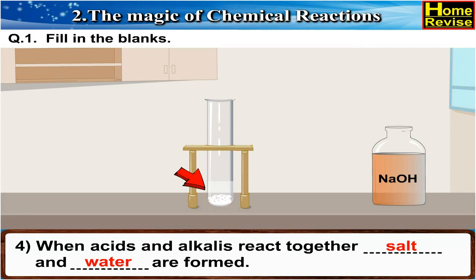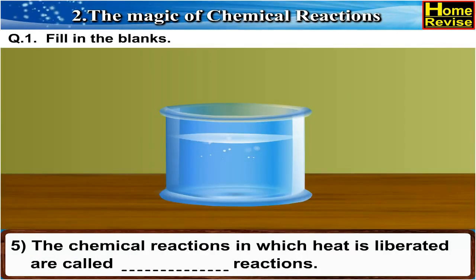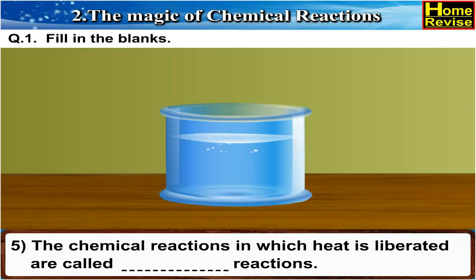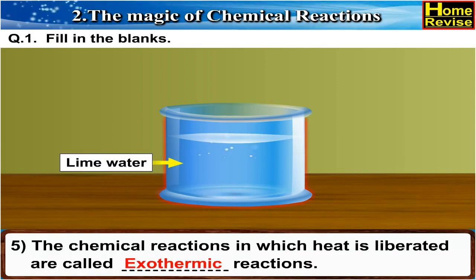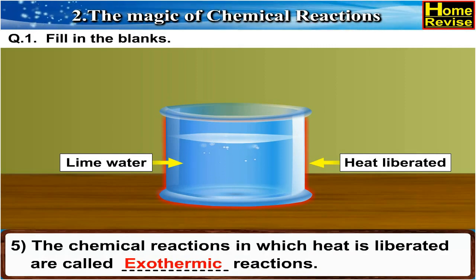5. The chemical reactions in which heat is liberated are called blank reactions. The answer is: the chemical reactions in which heat is liberated are called exothermic reactions.